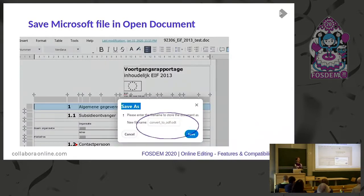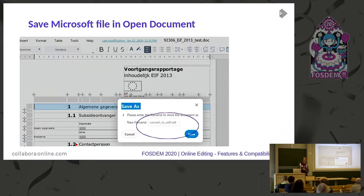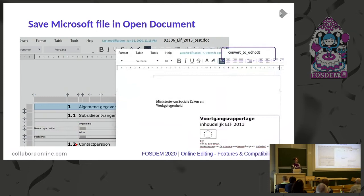Talking about online document editing, of course we prefer to work with open document format. But quite often we have to deal with Microsoft Office files. This is an example of a Microsoft Office file just loaded in Collabora Online — you can do a Save As and save it as an open document file. And you see that if you load that same file, it just looks similar. Our tooling is also a bridge between the open standard and the Microsoft file format.